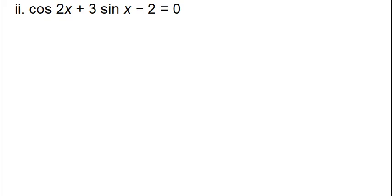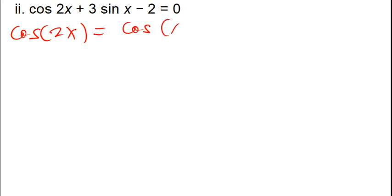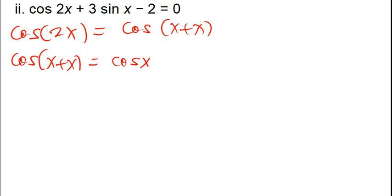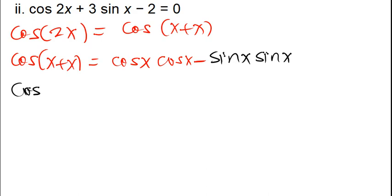We have to remember that cos2x is the same as cos(x + x), so we can write it as cos x times cos x. If there is a plus, we put minus, so it becomes cos x times cos x minus sin x times sin x.